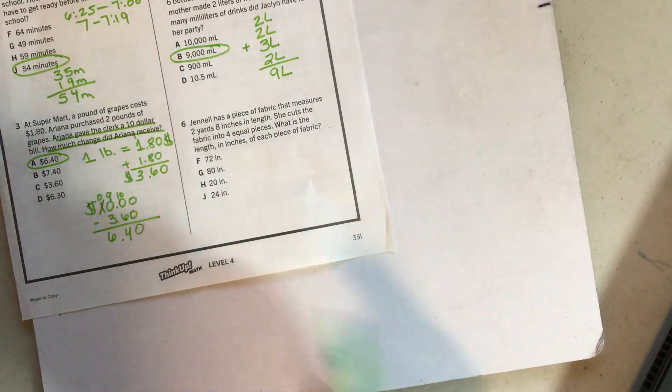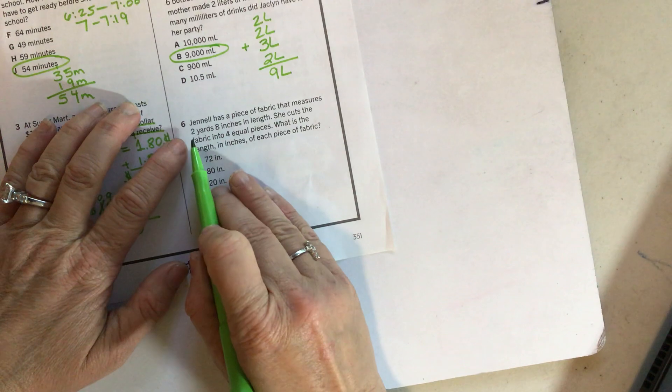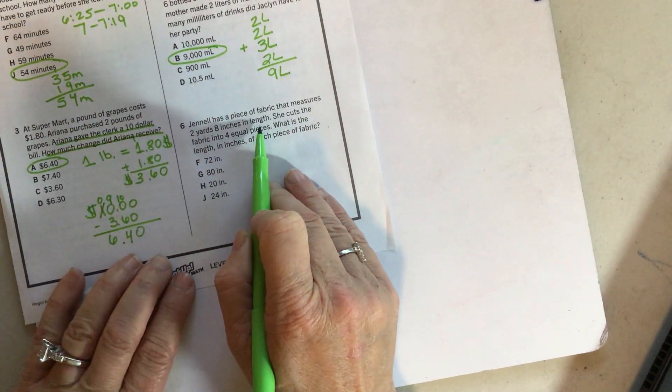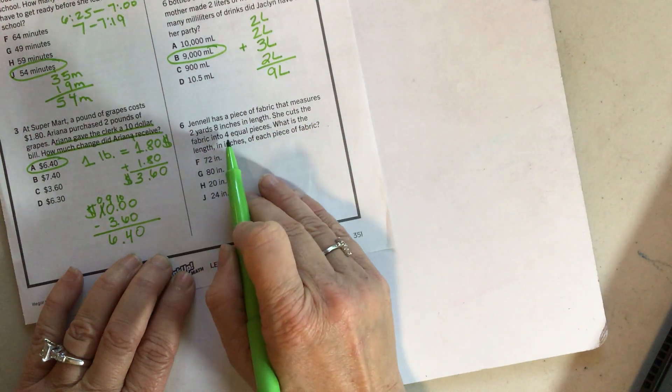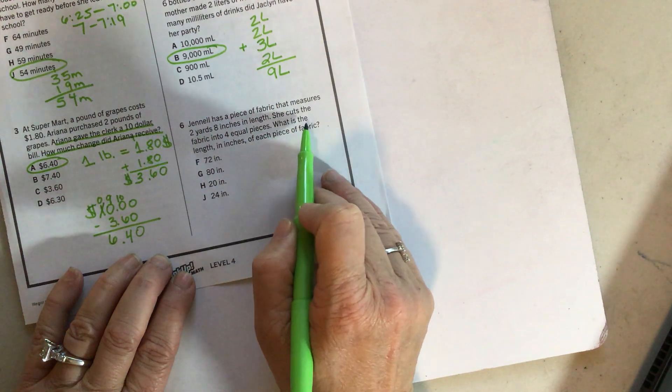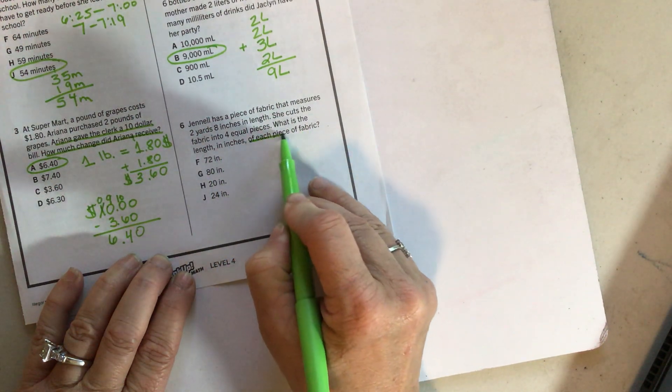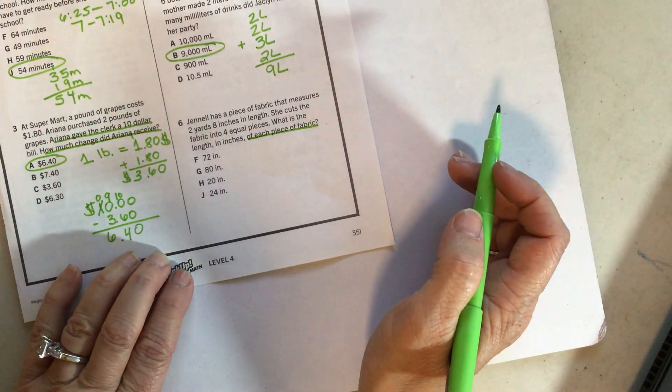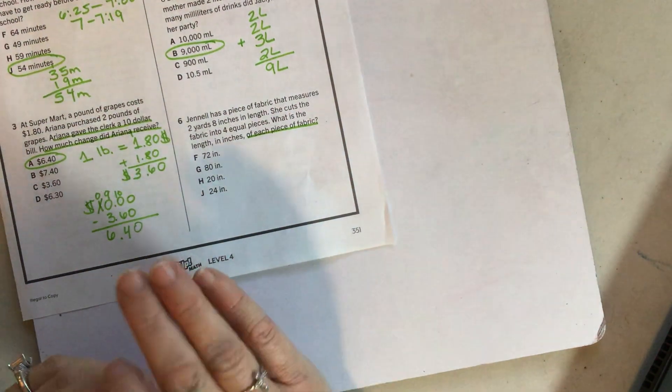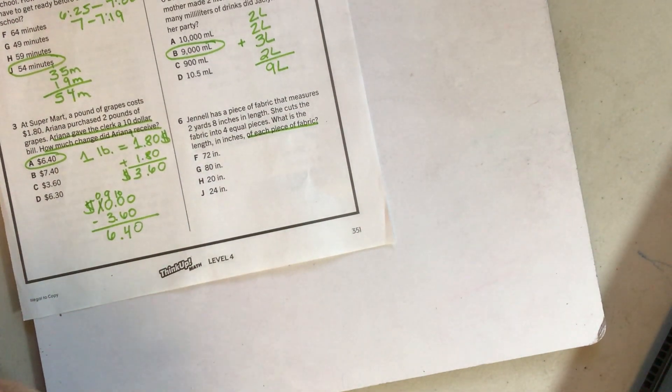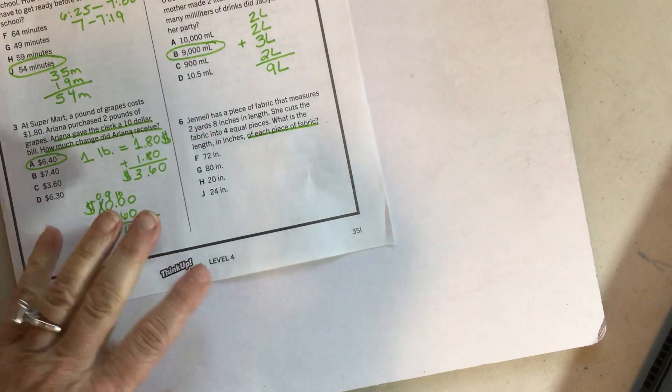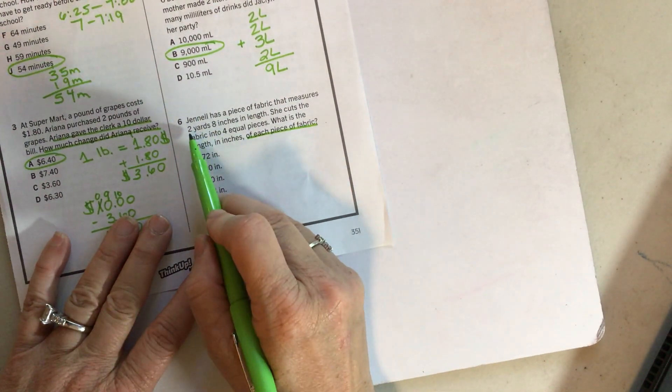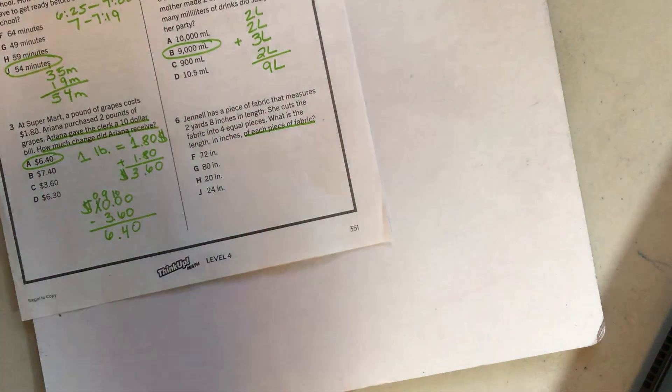Last one for today. Janelle has a piece of fabric that measures two yards and eight inches in length. She cuts the fabric into four equal pieces. What is the length in inches of each piece of fabric? So I did the same thing with number six as I did with number four. This is a definitely two to three step problem. And I got to a certain step, saw my answer, circled it, and then went and checked and went, oops, what did I do wrong?